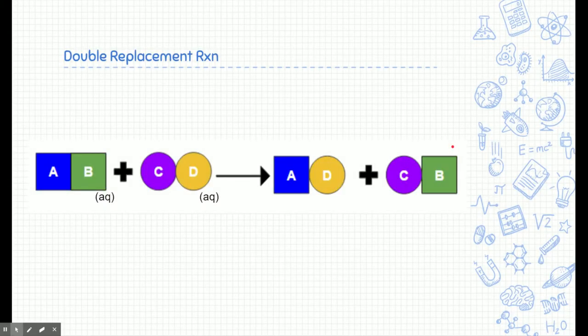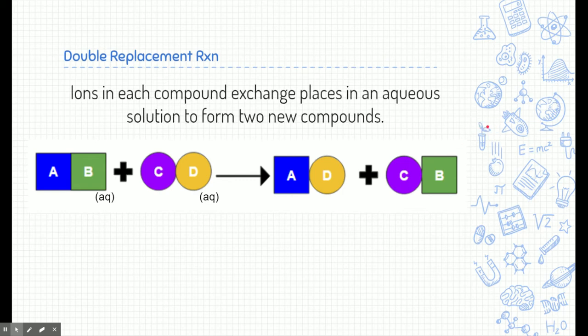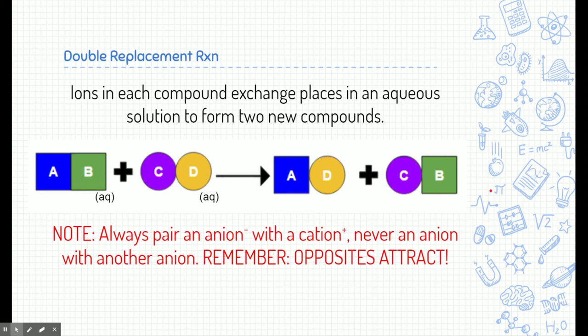What is a double replacement reaction? Here's the definition: ions in each compound will exchange places in an aqueous solution to form two new compounds. I like to think of it kind of like a dance. Here we have two compounds, AB and CD, and they're going to decide to switch their partners. We always pair like charges — cations or positively charged things with anions, negatively charged things. AB is a positive-negative set.